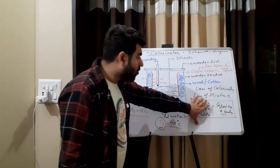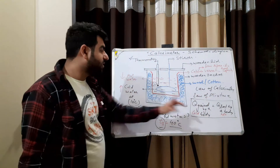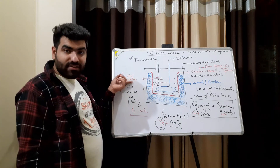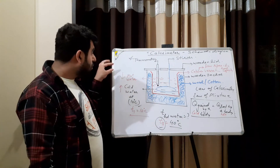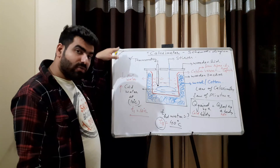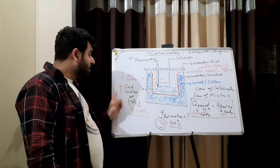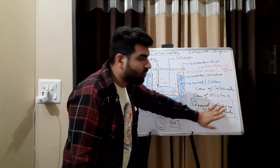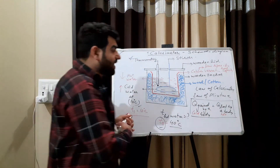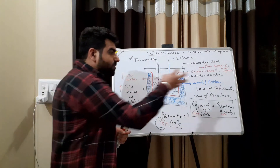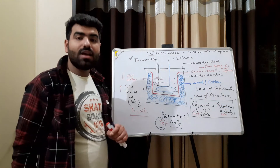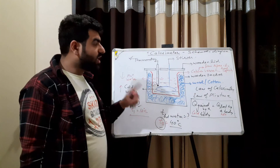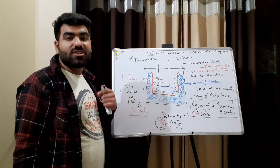So this is about the calorimeter and the law of calorimetry: whatever heat is gained by the cold body is equal to the heat given up by the hot body. The hot body loses only as much heat as is gained by the cold body — these two will always be equal. This was the law of calorimetry and the law of mixtures. From the next video, we will start with some numerical problems.